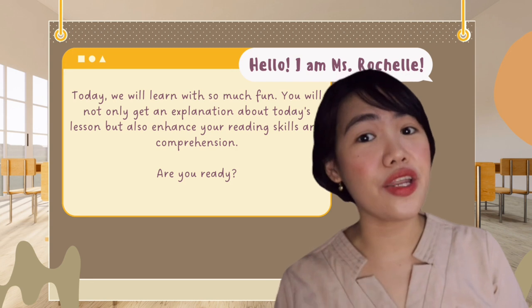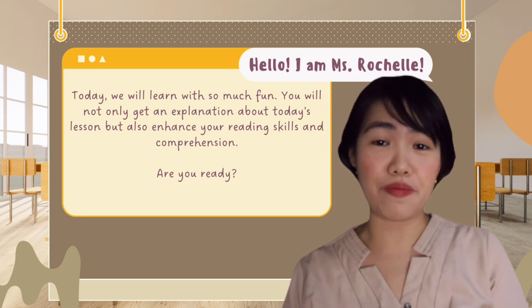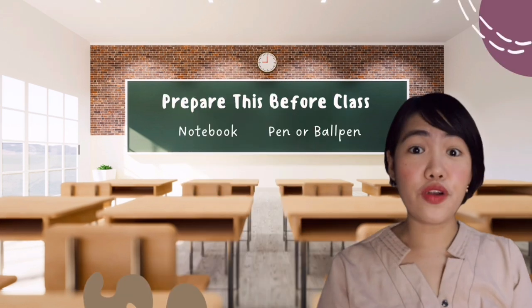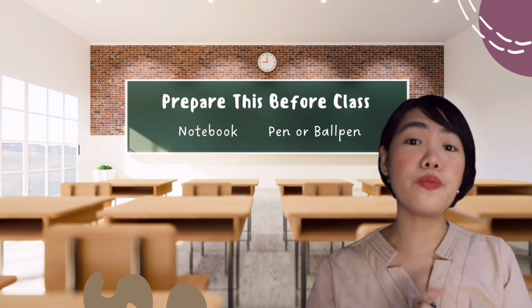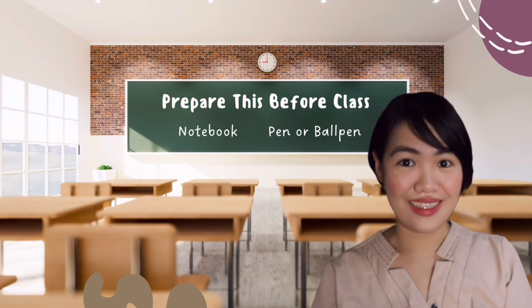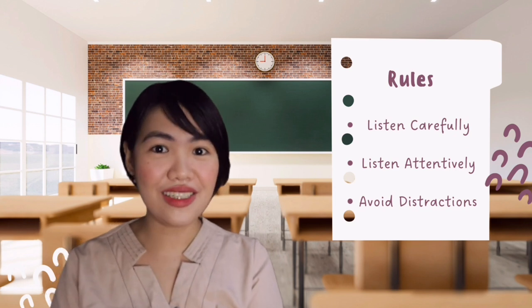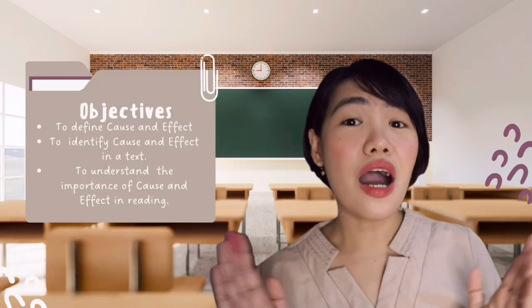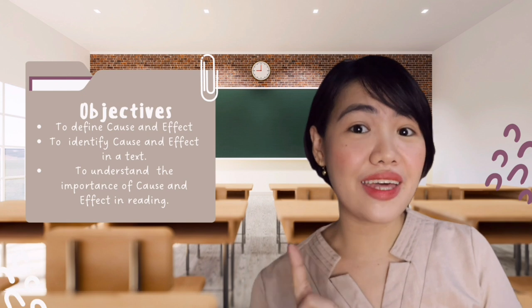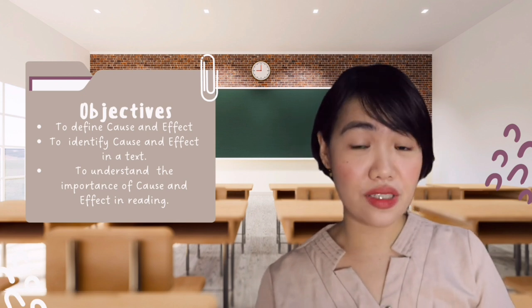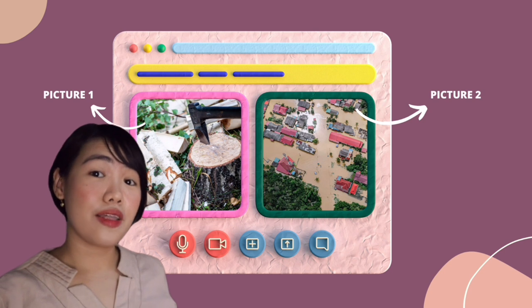Today, you are not only going to learn about the explanation of our topic, but you are also going to enhance your reading skills. I think you are all prepared and ready to learn our new lesson for today. Before we formally begin our class, I want you to prepare the following things: kindly prepare your notes or notebook, your pen or ball pen. And for the rules, please kindly listen carefully, listen attentively, and avoid distractions. For our today's objectives, we are going to define cause and effect, identify cause and effect in a text, and understand the importance of cause and effect in reading.